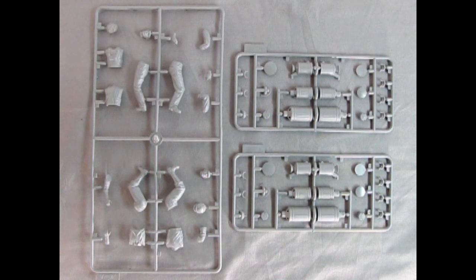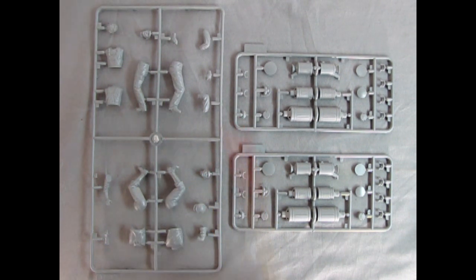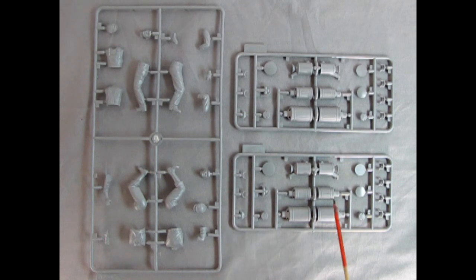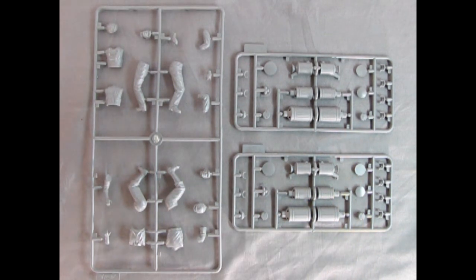So as Danny was showing us in the instructions here's our three parts trees. This one is A and then we've got two of B and B is of course the gasoline fuel tanks from back in the day.